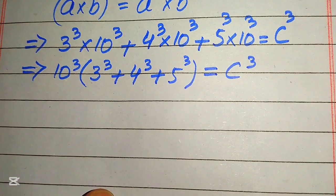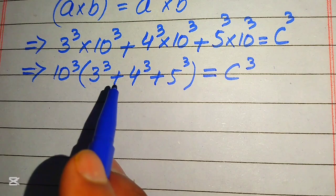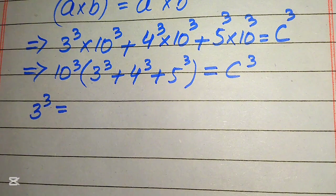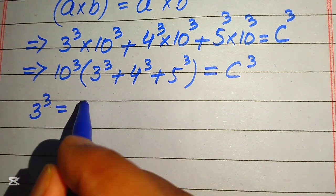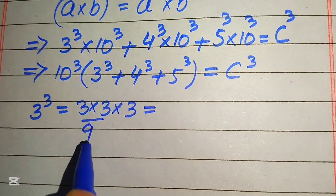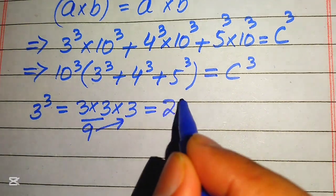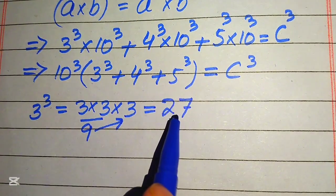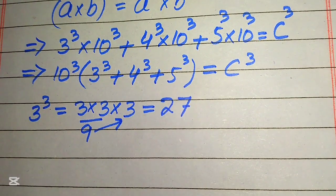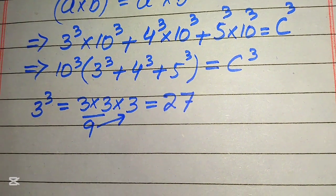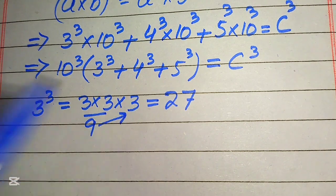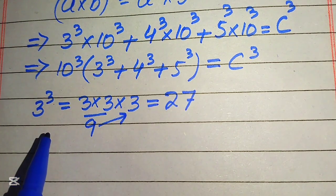Our next target is to focus on these three values and find the cube of 3, 4, and 5. The meaning of 3 cubed is that we multiply 3 three times: 3 times 3 is 9, and 9 times 3 is 27, which means 3 cubed equals 27. Some students can do these cubes directly in their mind, but for students who have difficulty finding the cube, I will do all the steps.